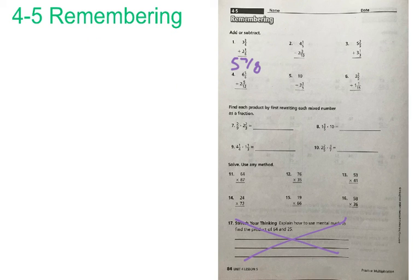Now we're going to look at number 2. We'll complete a subtraction problem together to review, and this one I believe we're going to have to borrow. We have 4 and 1 fifth, and from that we're subtracting 2 and 3 tenths.